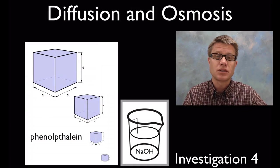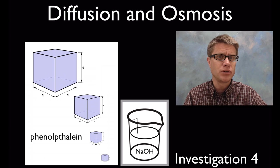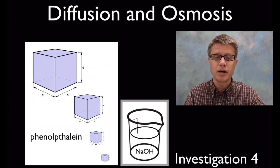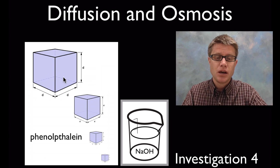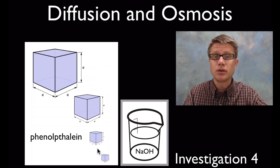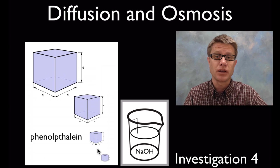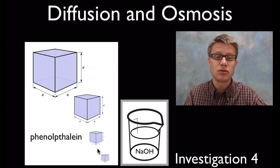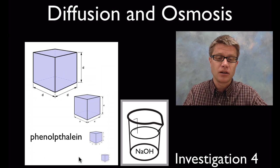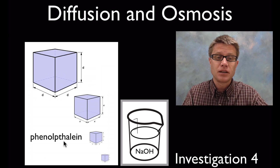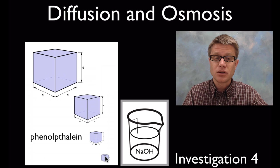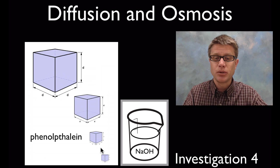Next one, investigation four, is kind of a three-part thing. It's looking at diffusion and osmosis. Step one, what we do is we take cubes. We're going to cut those cubes. First of all, we make them using agar, that's similar to what you find in a petri dish. Then we add a chemical to that called phenolphthalein.